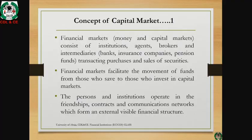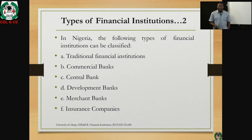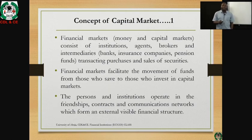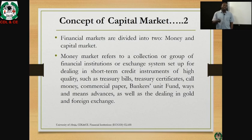As we round up this lecture, we'll look at the concept of the financial market. The financial market has two sides: the money market and the capital market. The money market refers to a coalition or group of financial institutions set up to deal with short-term loans. These short-term instruments include treasury bills, treasury certificates, call money, commercial paper, banker's unit funds, and so on.